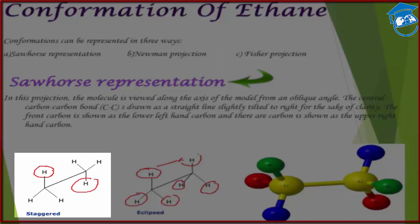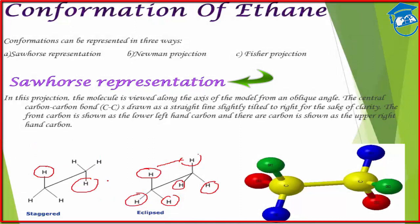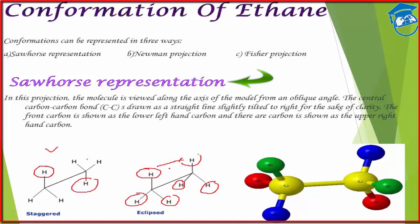In the staggered form, the hydrogens are not one above the other — they are offset, like a rotated mirror image. Staggered and eclipsed are 180 degrees apart in rotation. Which is more stable — staggered or eclipsed? Obviously staggered, because there is less repulsion. In the eclipsed form all three hydrogen atoms face each other directly, causing more repulsion and more strain. The forms in between staggered and eclipsed are called gauche forms.